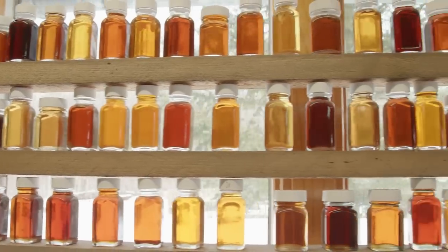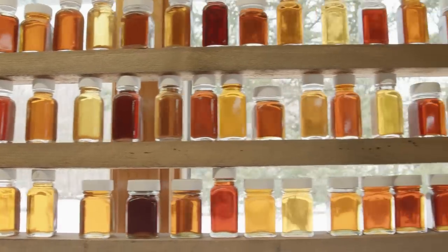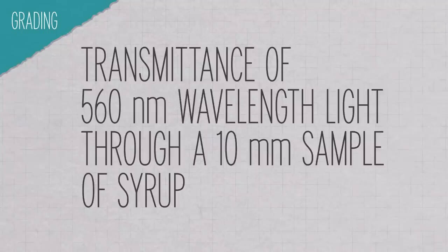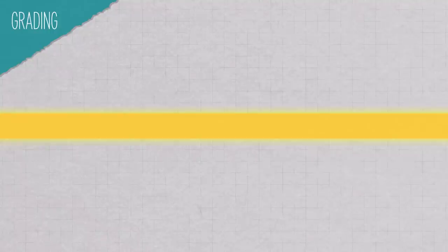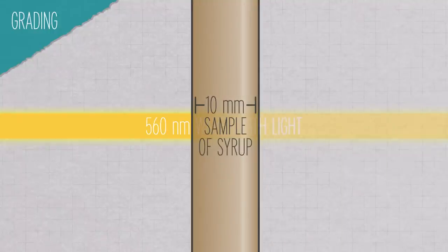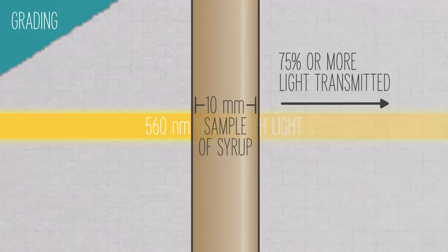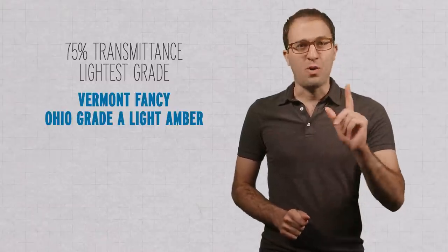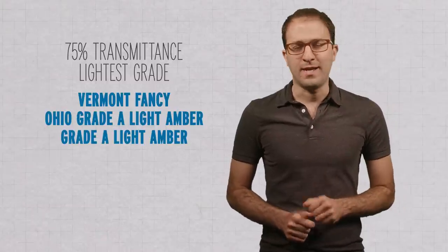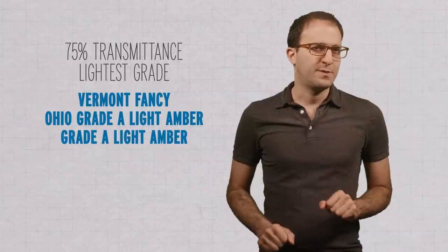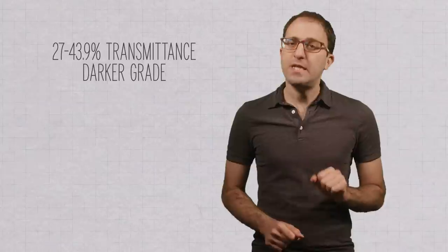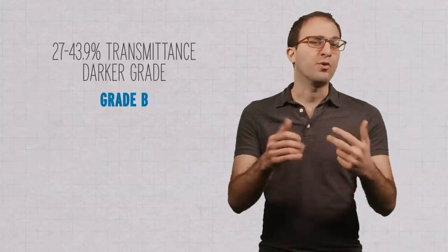Grading is partly about darkness of the syrup, or to be more precise, percent transmittance of 560 nanometer wavelength light through a 10 millimeter sample of syrup. Which means, if you shoot a beam of this color light through 10 millimeters of maple syrup, and 75 percent or more of it makes it through the syrup, then you've got yourself the lightest possible grade of syrup, which before 2015 was legally allowed to be called Vermont Fancy, Ohio Grade A Light Amber, or Grade A Light Amber. If a syrup transmits between 27 and 43.9 percent of this light, then you've got yourself a syrup which before 2015 was legally allowed to be called grade B, in Vermont.